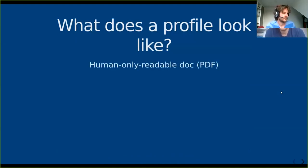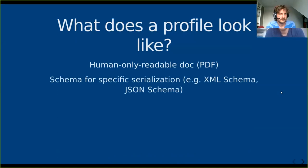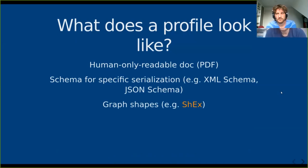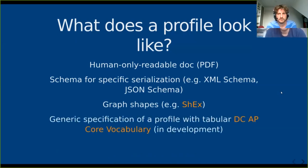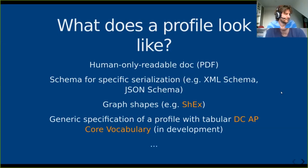What can a profile look like? There are many different ways: a human-readable document like a PDF, machine-readable schemas for specific formats like XML schema or JSON schema, something like SHACL to define graph shapes for RDF data, or in the future you might use the Dublin Core Application Profile core vocabulary to define a metadata profile using tabular data. There are probably lots of other ways to define and publish your metadata profile.